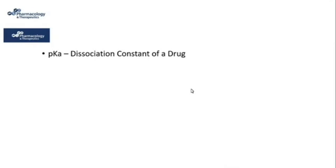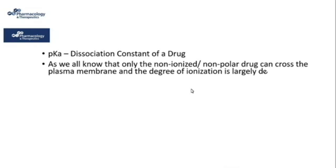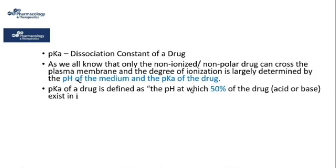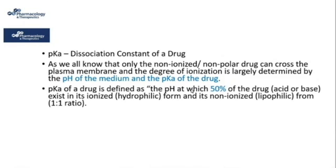pKa is the dissociation constant of a drug which may indicate the strength of a drug as an acid or a base in a given medium. Only the non-ionized or non-polar drug can cross the plasma membrane, and the degree of ionization is largely determined by the pH of the medium and the pKa of the drug. pKa is defined as the pH at which 50% of the drug — acid or base — exists in its ionized (hydrophilic) form and its non-ionized (lipophilic) form in a 1 to 1 ratio.